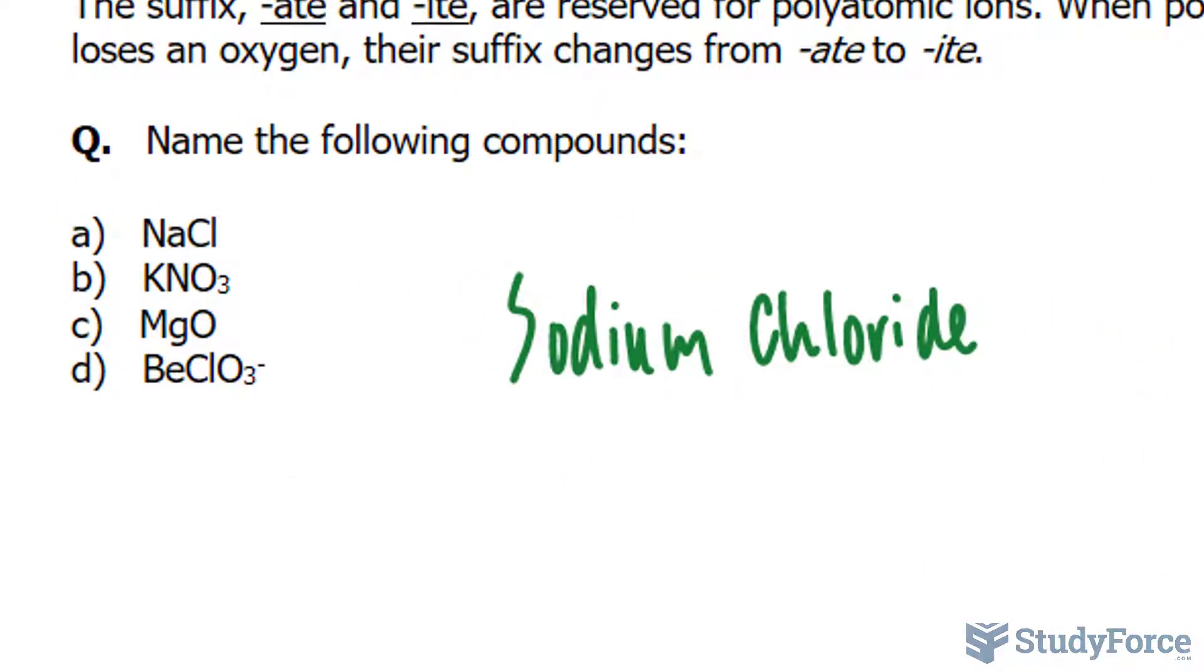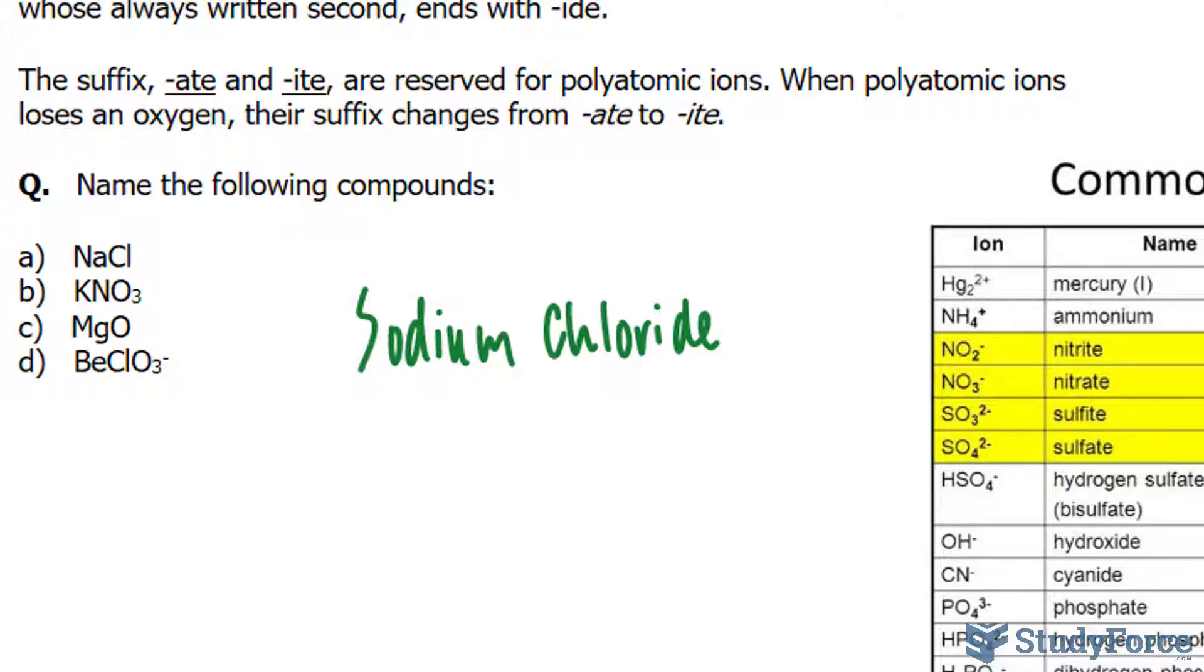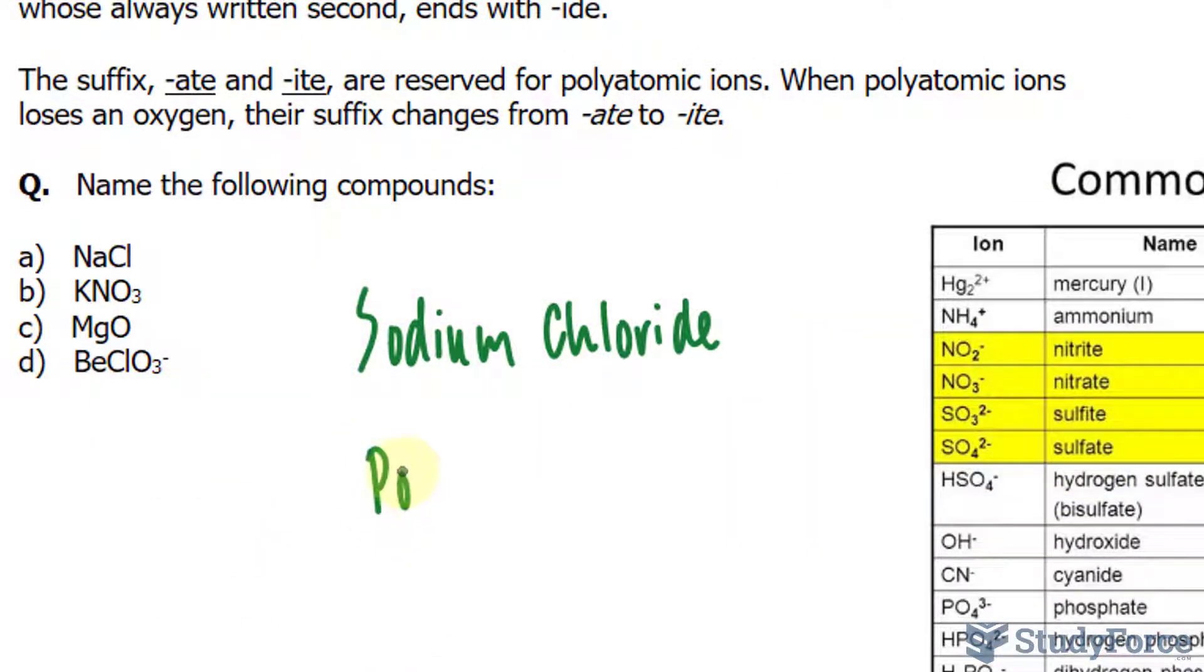In example B, we have potassium represented by the letter K, and the rest of the molecule is NO3. Taking a quick look at this table, you'll notice that NO3 minus is nitrate. So the way you would name this is potassium nitrate.